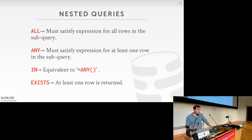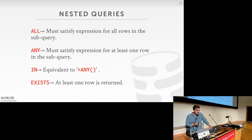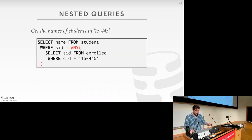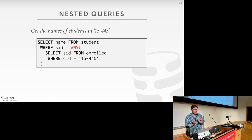The different operators for nested queries are: ALL — the expression must be satisfied for all rows in the subquery; ANY — must satisfy at least one row; IN — equivalent to ANY; EXISTS — at least one row must be returned. For example, to get all students in 15-445: SELECT name FROM student WHERE sid = ANY (SELECT sid FROM enrolled WHERE cid = '15-445').